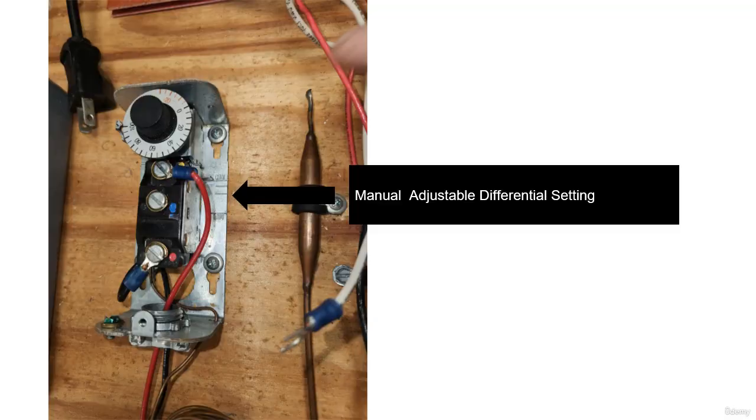Most thermostats have a differential built in, so if you are set at 75 degrees, it may cycle on and off in a 6 to 10 degree swing. It won't be exact. Some have adjustable differentials.